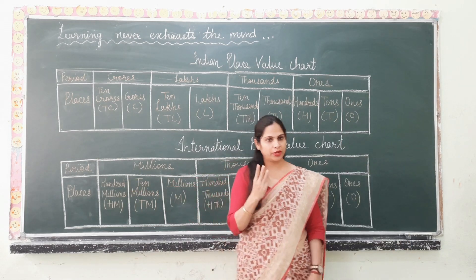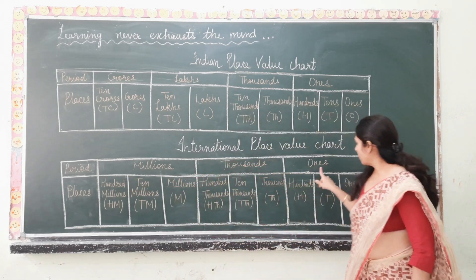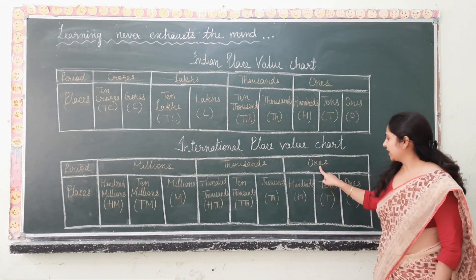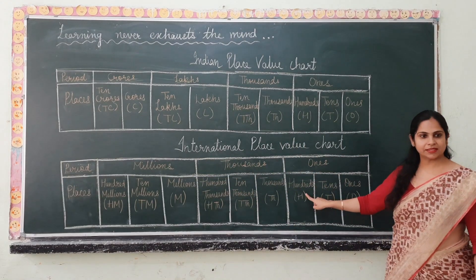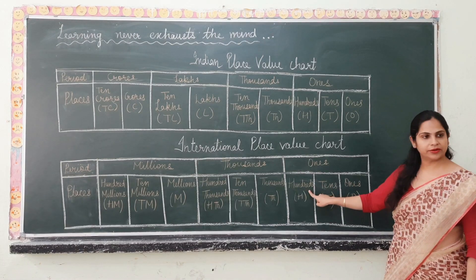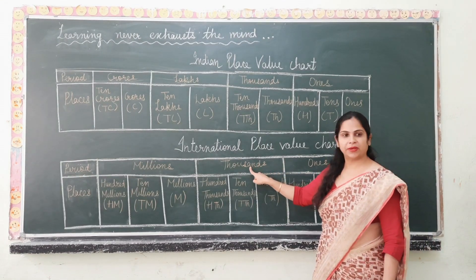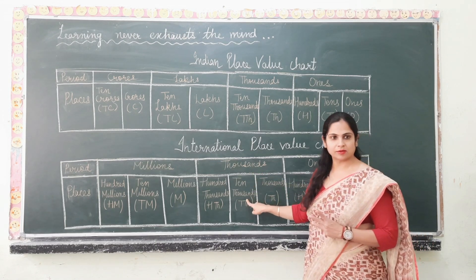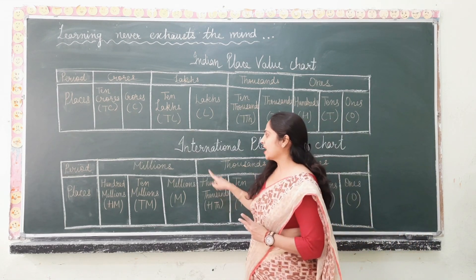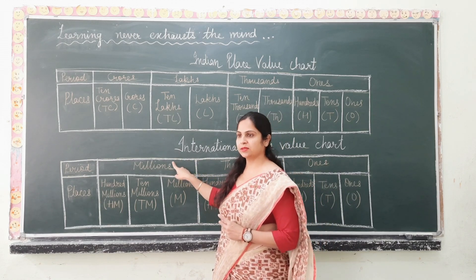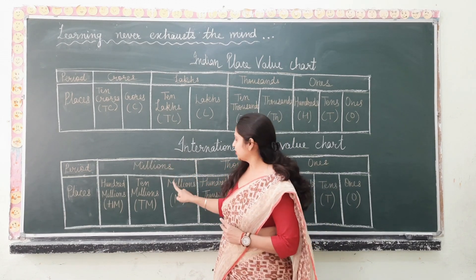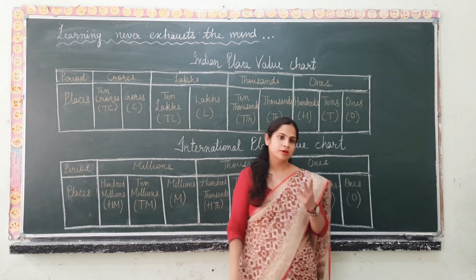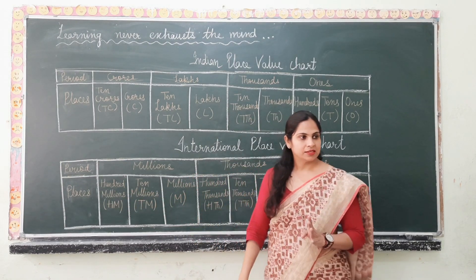The international place value chart has 3 periods: ones, thousands, and millions. The ones period has 3 places: ones, tens, and hundreds. The thousands period also has 3 places: ones, tens, and hundreds of thousands. And the millions period has millions, ten millions, and hundred millions — also 3 places.